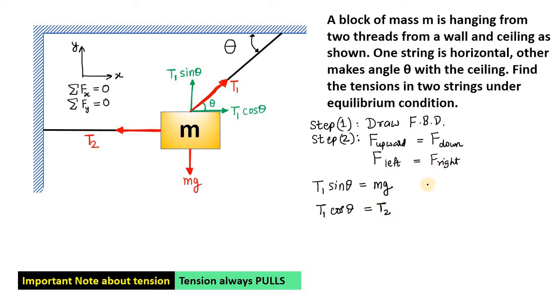So, these are our two equations. Now, from the first equation, we can easily write down that the tension T1 must be equal to mg divided by sin theta.